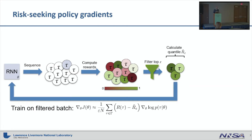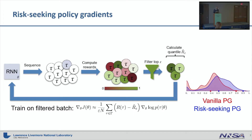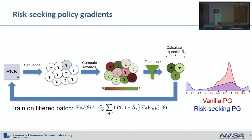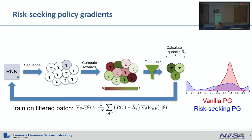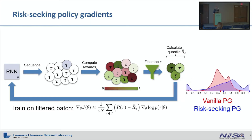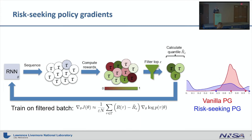We use only that filtered batch for training the recurrent neural network. In this animation you can see the comparison between the vanilla policy gradient in red and the risk-seeking policy gradient in blue. The colored dots represent the current average reward and the stars represent the current best reward. It's easy to see that the risk-seeking approach reaches the best score much faster than the vanilla policy gradient, which slowly improves average performance but never reaches quite as high as the risk-seeking approach.